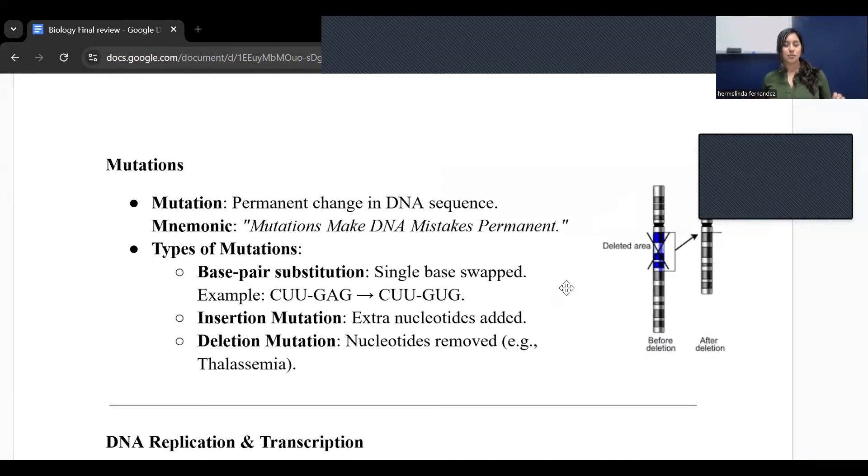Now we're moving on to mutations. Mutations are permanent changes in DNA. An example to remember this would be that mutations make DNA mistakes permanent. These are permanent changes in DNA. So if there's a question that asks you, are mutations permanent changes? Yes they are, because they are permanent.